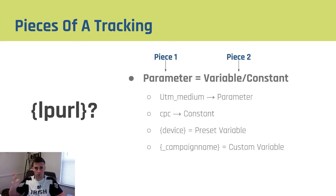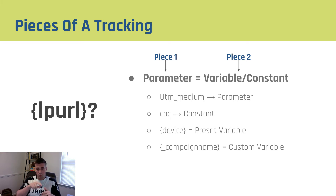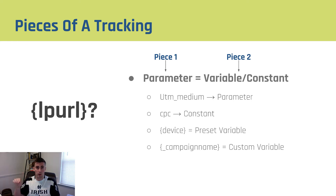So if our parameter is UTM medium, a constant would be CPC or paid traffic. If we want to do something dynamic, we could use device. The device in curly brackets is a preset variable by Google — I'll post a link below where you can check out all of their pre-built variables. Or if we wanted to, we could go in and create a custom variable, which uses an underscore and then a particular name. I'll show you how to build these in the actual tutorial portion, but this lets us put whatever value we want in there.